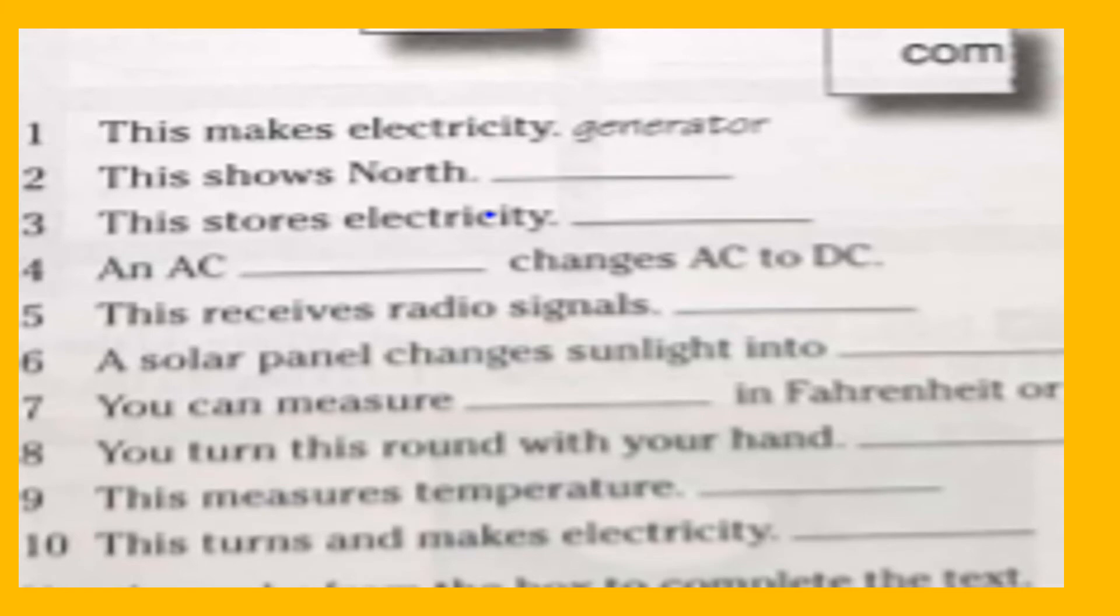So now in this exercise, it's on page fifteen. Here we have descriptions of some devices. For example, number one: This makes electricity. What makes electricity? Generator. Let's do number two also as an example. This shows north. Which device shows north? It's compass. Very good.